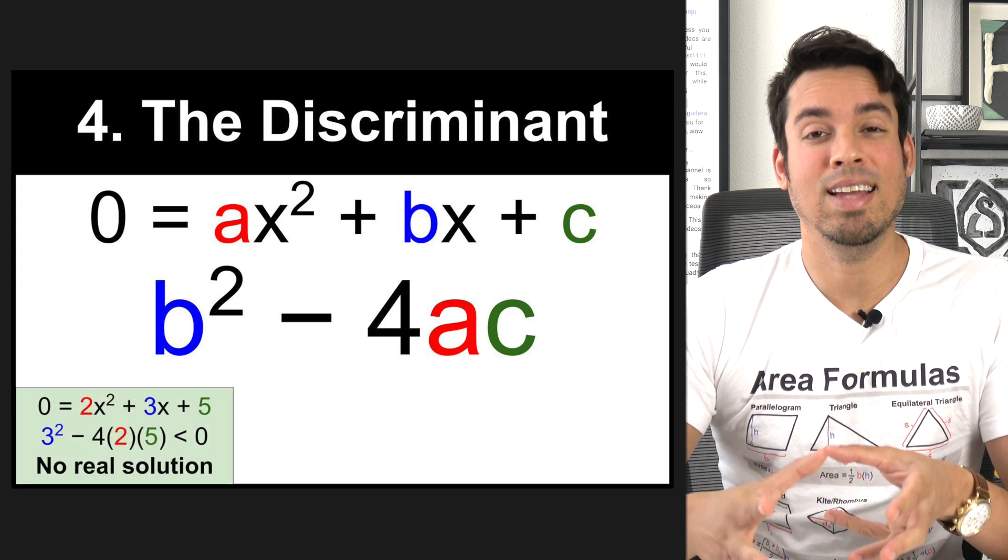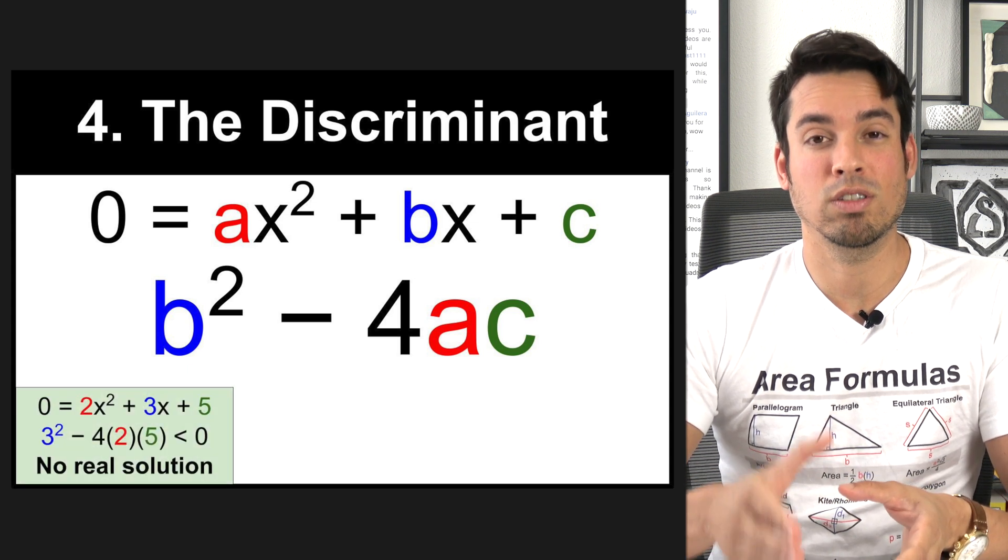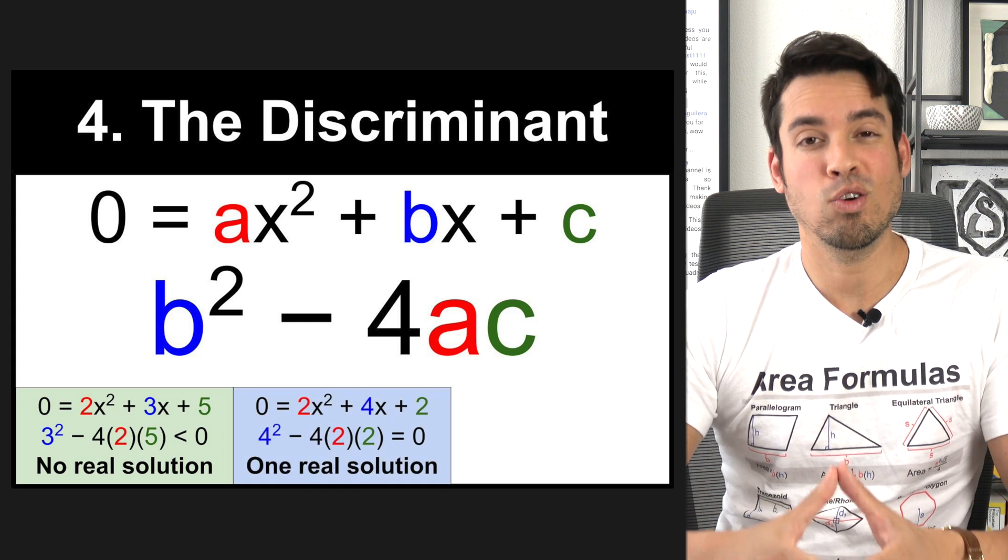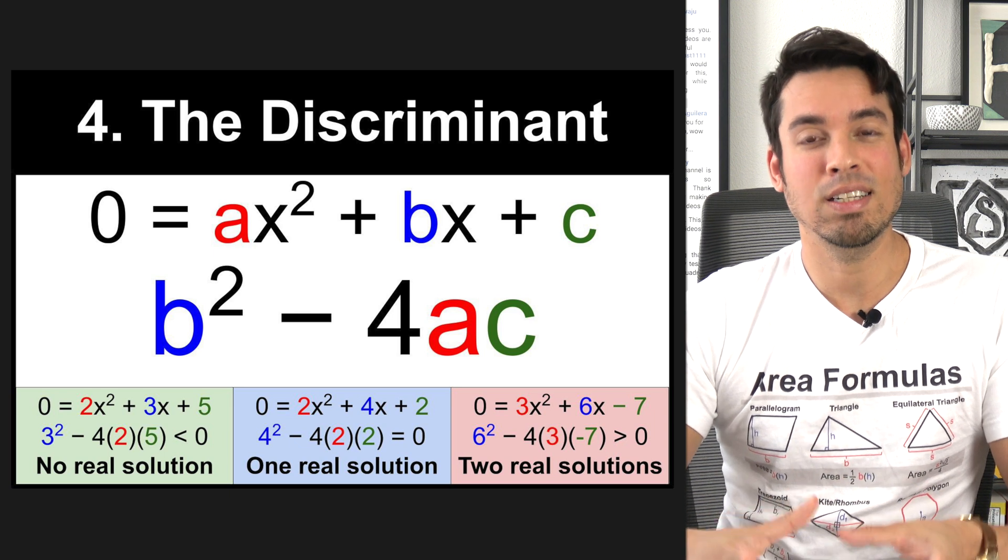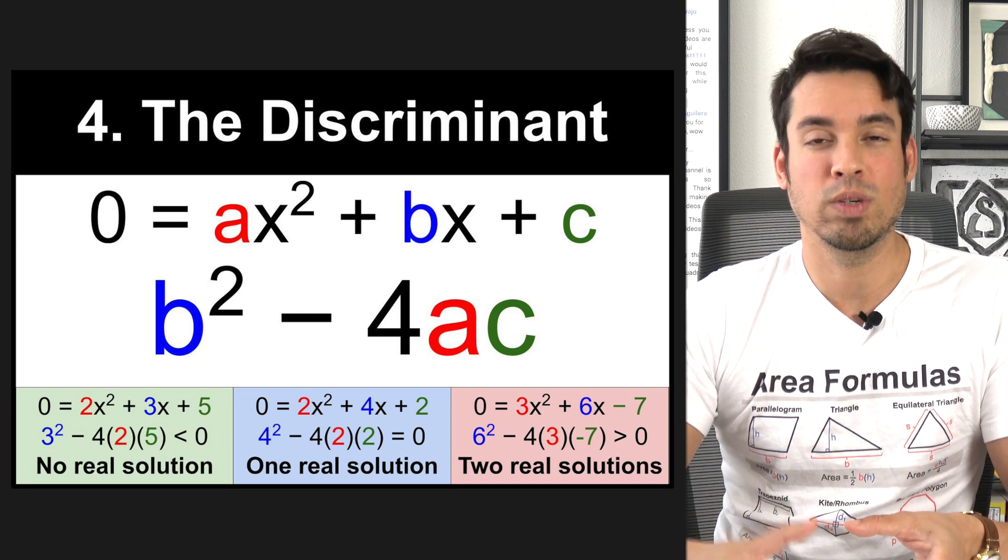For example, if the discriminant is negative, it means that there are no real solutions. When the discriminant is zero, it means that there is one real solution. Last but not least, when the discriminant is positive, it means that you have two real solutions.